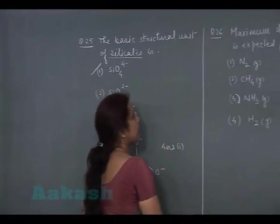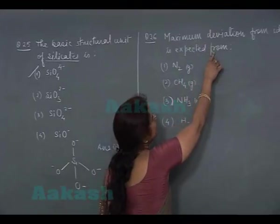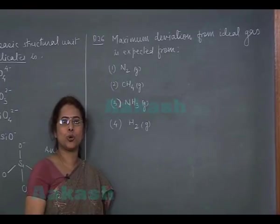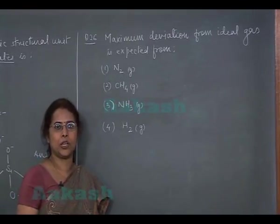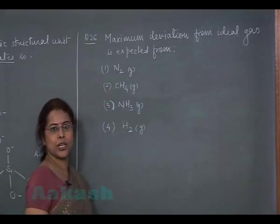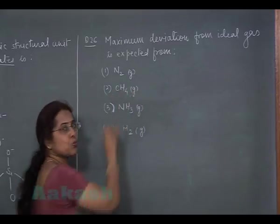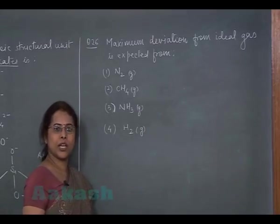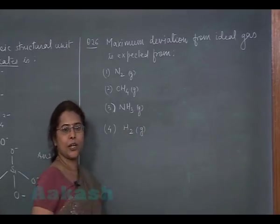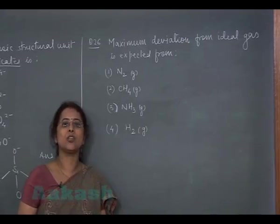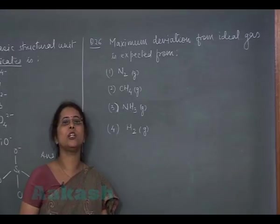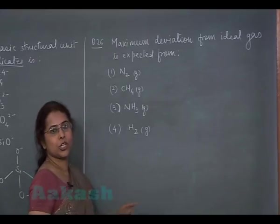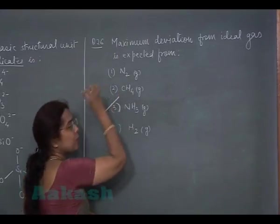The next question is question number 26. Maximum deviation from ideal gas is expected from. It means which gas will show maximum deviation from ideal behavior. Now the first option is nitrogen gas. Nitrogen gas is a non-polar gas. Second is methane gas. That is also a non-polar gas. Third is ammonia. Ammonia is a polar gas. Fourth option is hydrogen. Again a non-polar gas. As we know in case of polar gases, intermolecular forces of attraction are quite strong. So they will show deviation from ideal behavior. Answer should be option 3.